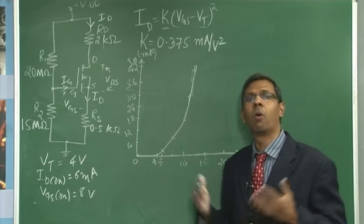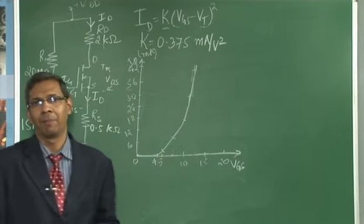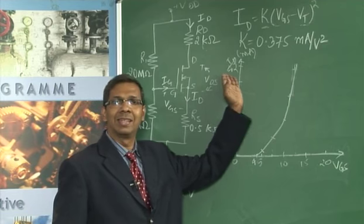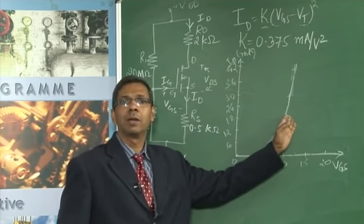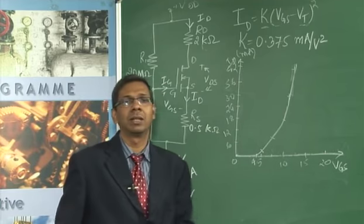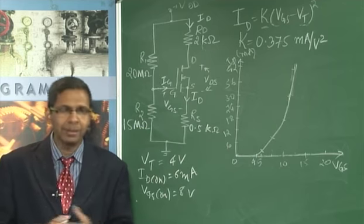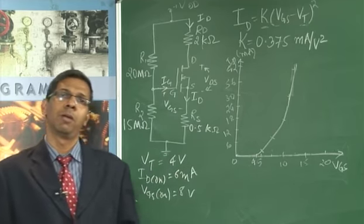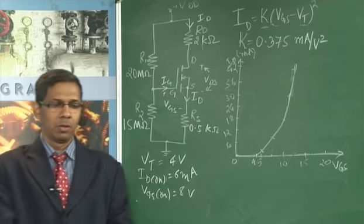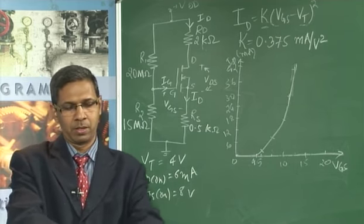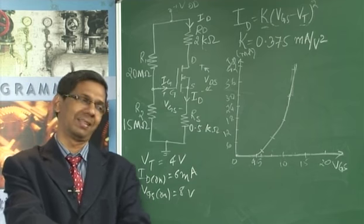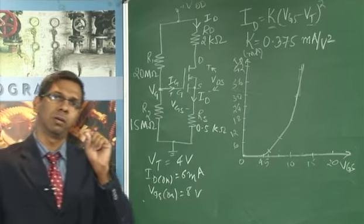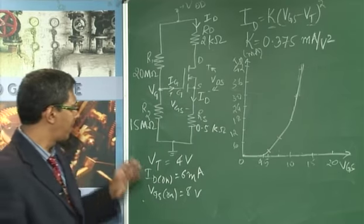Once the transfer curve is plotted, we draw the DC load line. The load line intersects the x and y axes, cutting the transfer curve at the Q point. To find the DC load line, we write equations for both the output loop and the input loop, starting with the expression for VGS.